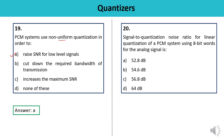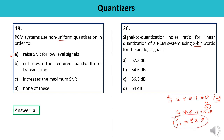Question 20: What is the signal-to-quantization noise ratio for linear quantization of a PCM system using 8-bit words? The formula for SNR is: SNR ≤ 4.8 + 6V dB, where V is the number of bits. With V = 8, this gives SNR ≤ 4.8 + 6×8 = 4.8 + 48 = 52.8 dB. The answer is A.